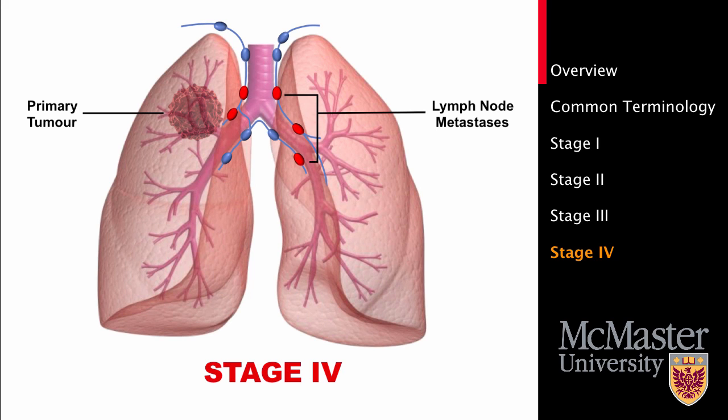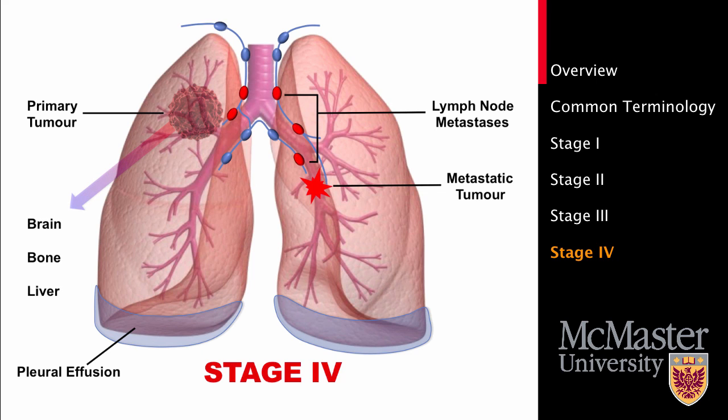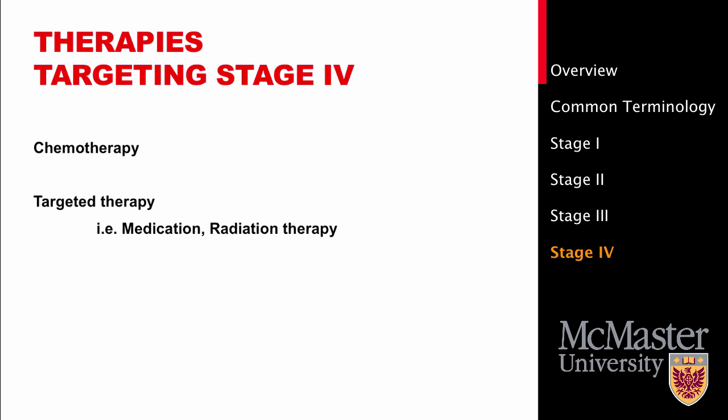Stage 4 is the final stage, whereby the cancer is either accompanied by pleural effusion — a fluid buildup between the lungs and the chest wall — or has metastasized to other parts of the body such as the brain, bones, or liver. Although stage 4 cancers are difficult to cure, there are treatment options available. Given that the cancer has spread to other parts of the body, surgery is not usually recommended. Chemotherapy or targeted therapy may be prescribed depending on the type, size, and location of the tumors and whether you are on medications for other health conditions. Radiation may be used to shrink tumors that are causing symptoms.